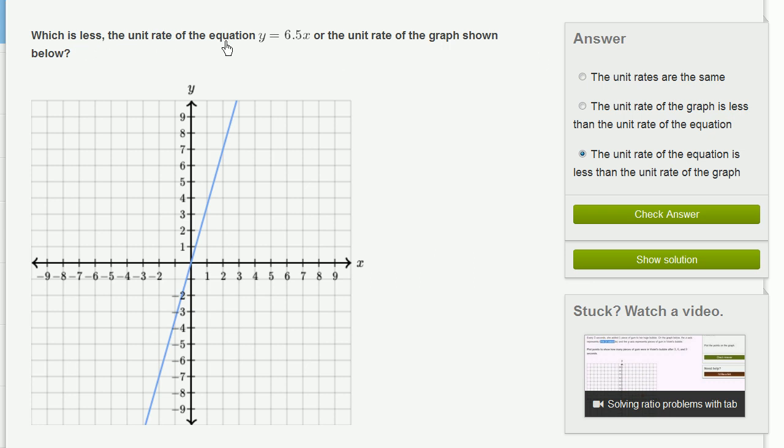Which is less, the unit rate of the equation y equals 6.5x, or the unit rate of the graph shown below?